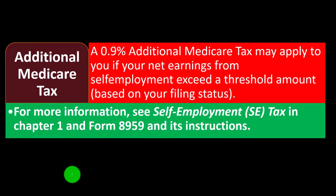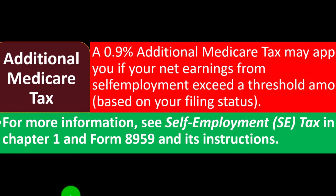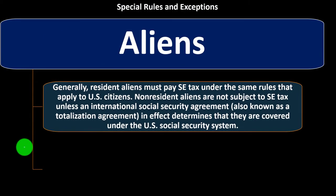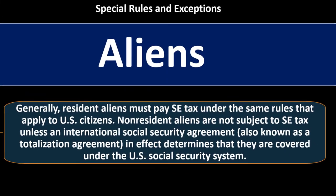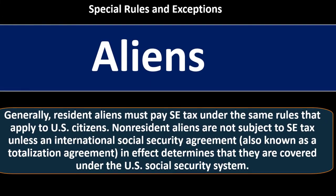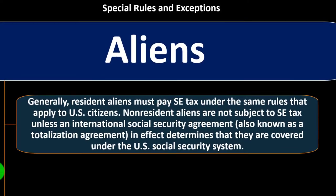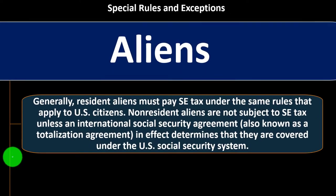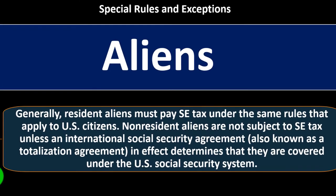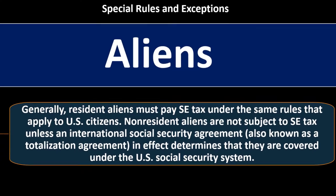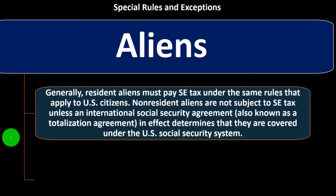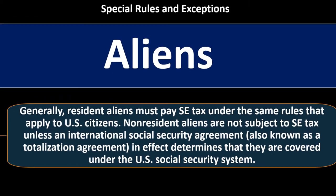For more information, see self-employment SE tax in Chapter 1, and Form 8959 and its instructions. Special rules and exceptions — aliens: generally, resident aliens must pay self-employment tax under the same rules that apply to U.S. citizens. Non-resident aliens are not subject to self-employment tax unless an international Social Security agreement, also known as a totalization agreement, determines that they are covered under the U.S. Social Security system. This becomes complicated because the Social Security tax sounds more like a benefit program, whereas Medicare is more of a safety net.